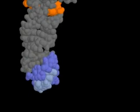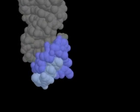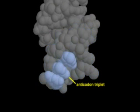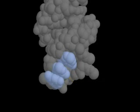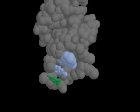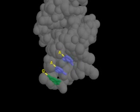The anticodon is comprised of three nucleotides complementary to the codon in the mRNA. The bases are exposed and are thus freely accessible for base pairing during protein synthesis. In this example, the anticodon sequence is GAA, which would match a UUC codon on a messenger RNA, specifying phenylalanine.